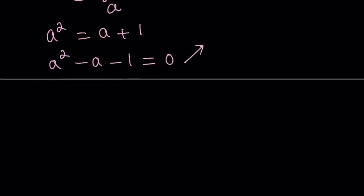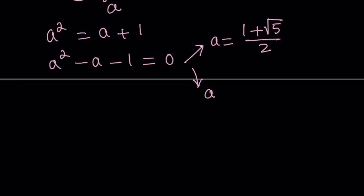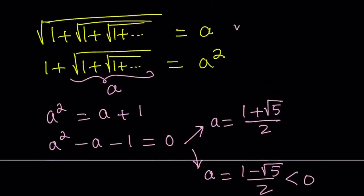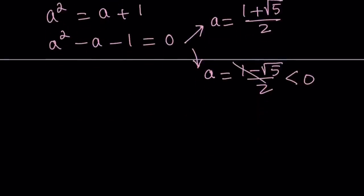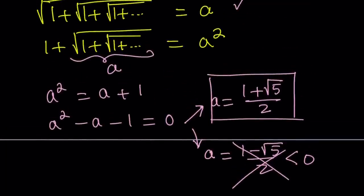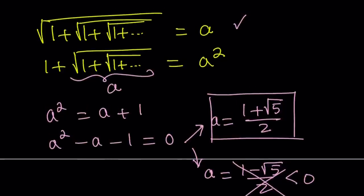By putting everything on the same side, we get a squared minus a minus 1 equals 0. This quadratic has two solutions. Using the quadratic formula, one is 1 plus the square root of 5, divided by 2. The other is 1 minus root 5 over 2. Since the square root of 5 is greater than 1, this second solution is negative. Our expression is positive, so we reject the negative value. Therefore, a equals 1 plus root 5 over 2.